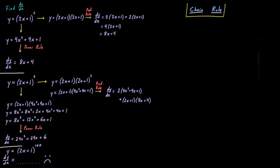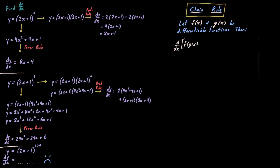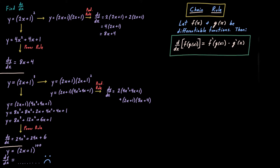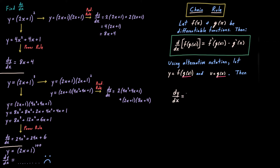Here is a statement of the rule — a proof will be provided in a separate video. Let f and g be differentiable functions. Then the derivative of f composed with g — the derivative of that entire composite function — is f prime evaluated at g times the derivative of g itself. That is the standard form of the chain rule. But sometimes it's not the most convenient form. Using alternative notation, letting y equal the composite function and u standing for g of x, then we can rewrite the chain rule as: dy over dx equals dy over du times du over dx.